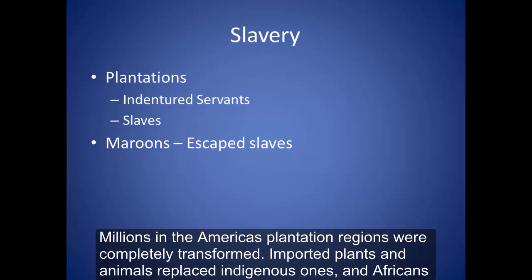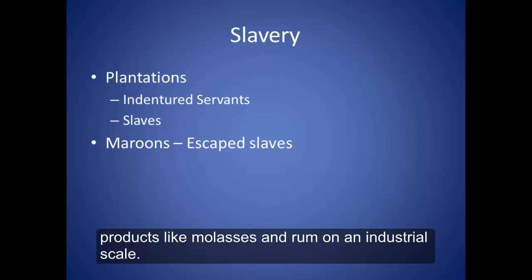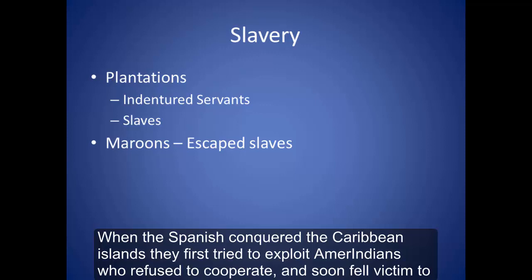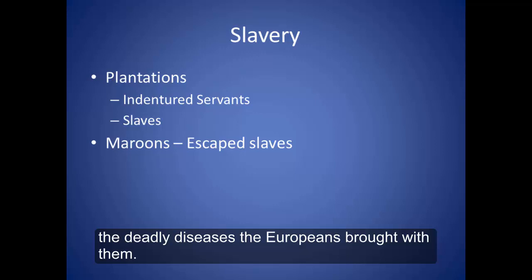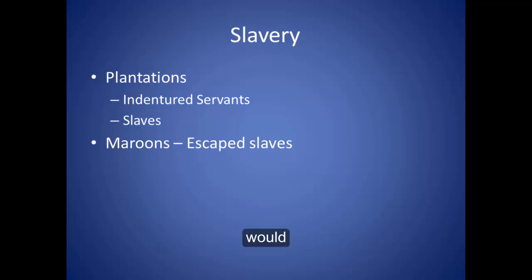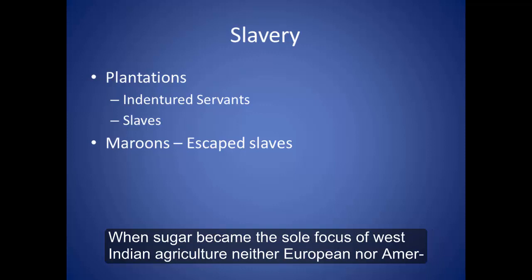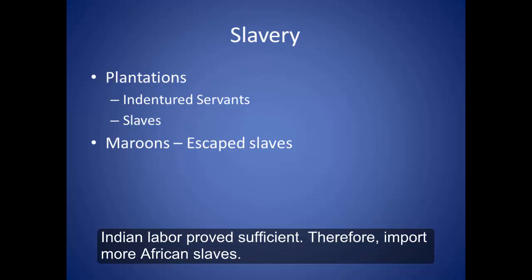Imported plants and animals replaced indigenous ones, and Africans became a predominant population as planters systematized the production of sugar and related products like molasses and rum on an industrial scale. When the Spanish conquered the Caribbean islands, they first tried to exploit Amerindians, who refused to cooperate and soon fell victim to the deadly diseases the Europeans brought with them. Later, European indentured servants — white Europeans who served five to seven years and then would be set free — would become vulnerable to tropical diseases such as yellow fever and malaria brought from Africa. When sugar became the sole focus of West Indian agriculture, neither European nor Amerindian labor proved sufficient.